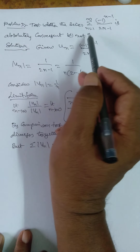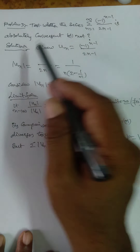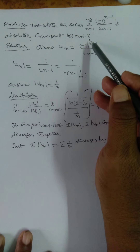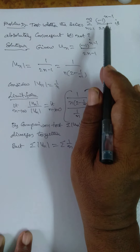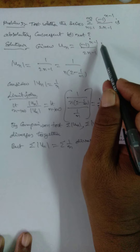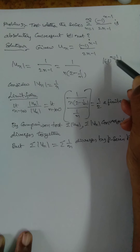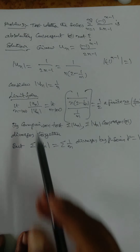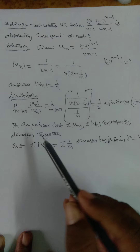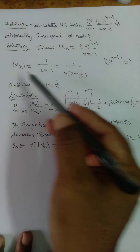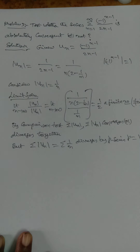Problem 3: Test whether the series Σ(n=1 to ∞) (−1)^(n−1)/(2n−1) is absolutely convergent or not. According to the given problem, Uₙ = (−1)^(n−1)/(2n−1). Taking |Uₙ|: mod(−1)^(n−1) = 1, so |Uₙ| = 1/(2n−1). The series automatically becomes a positive term series.